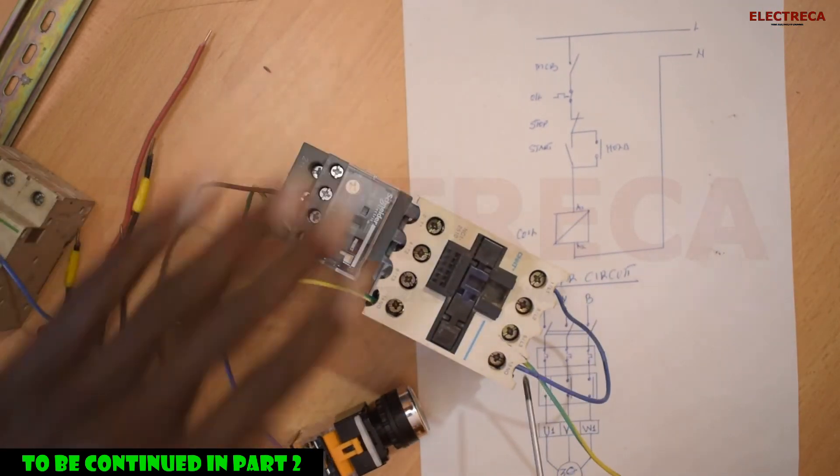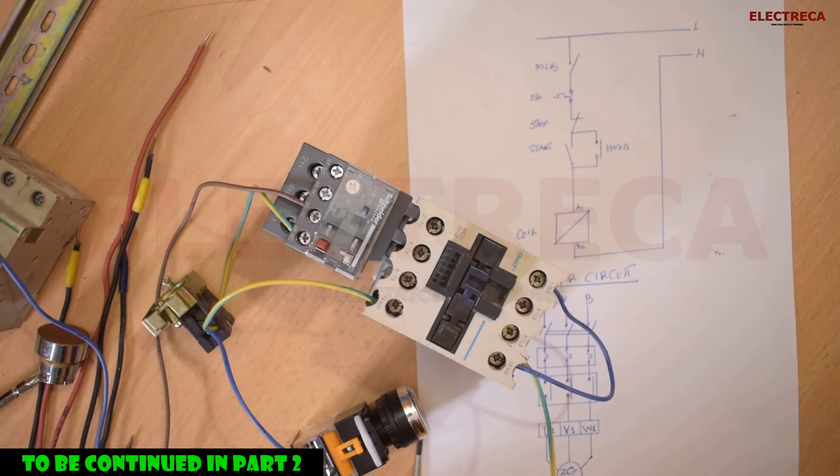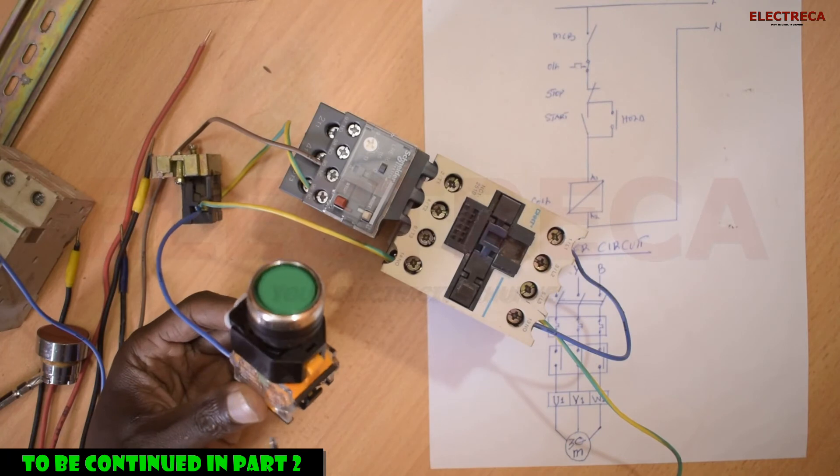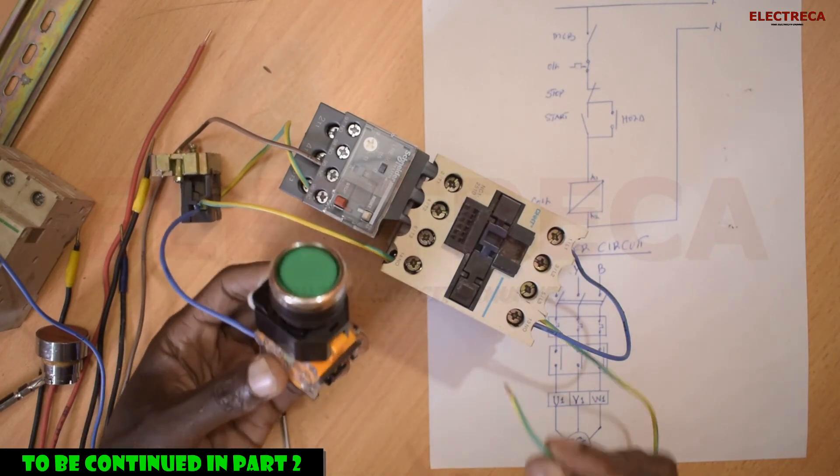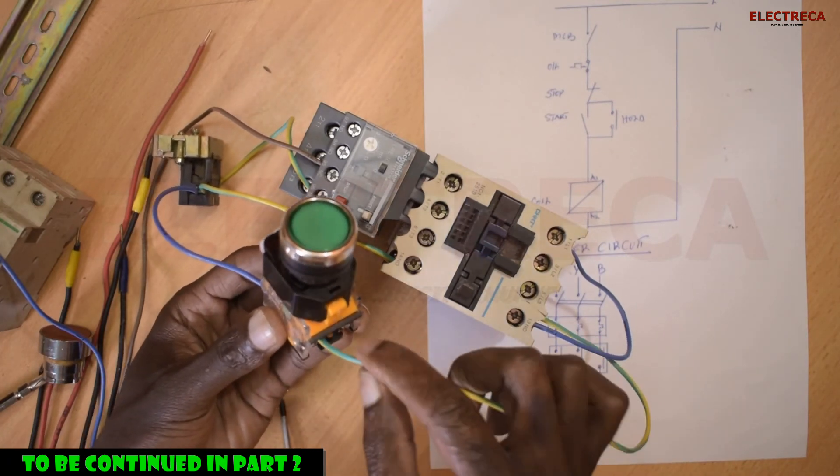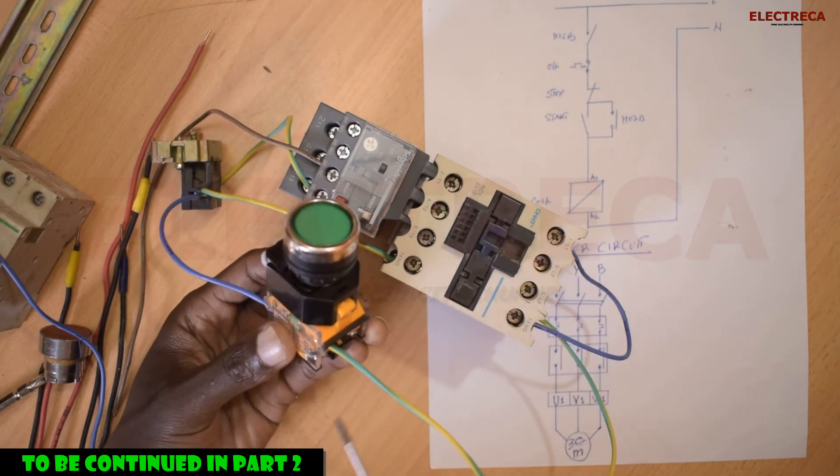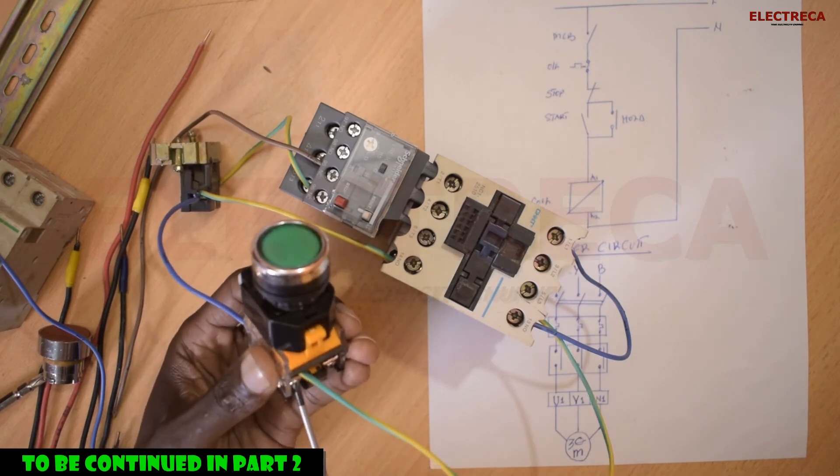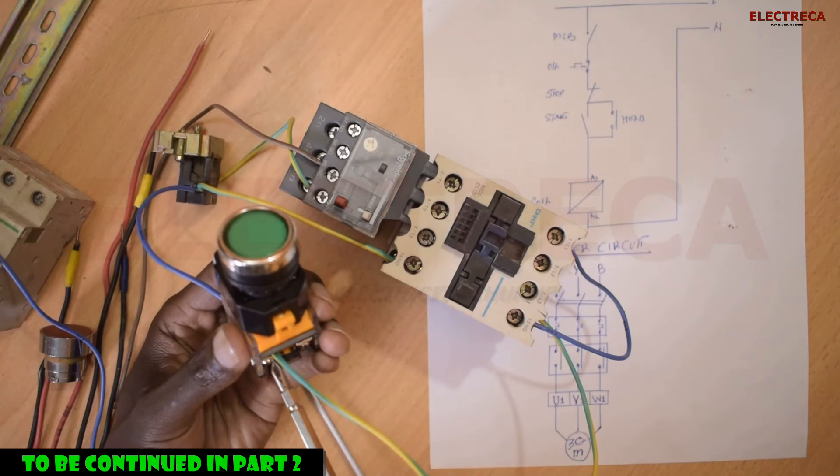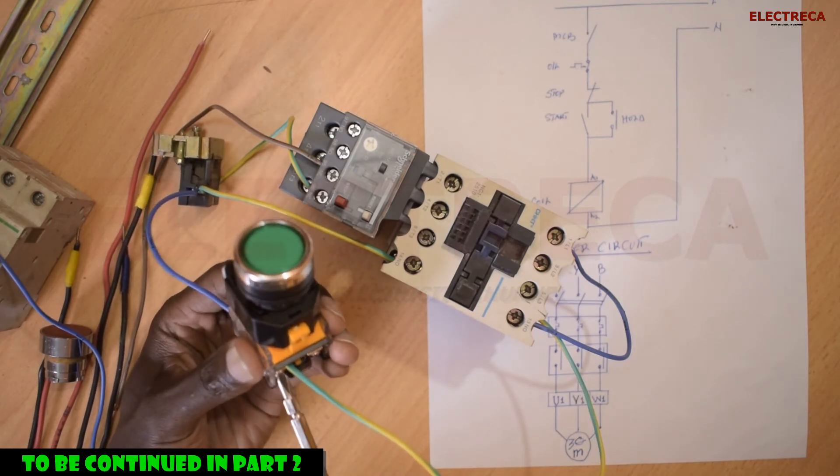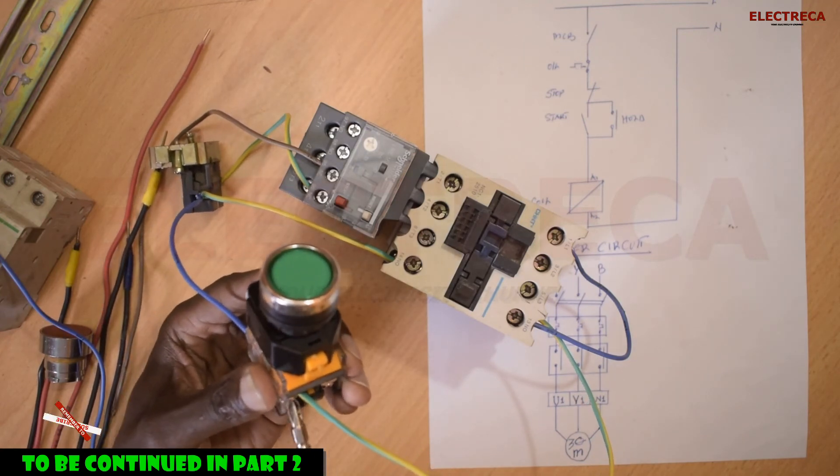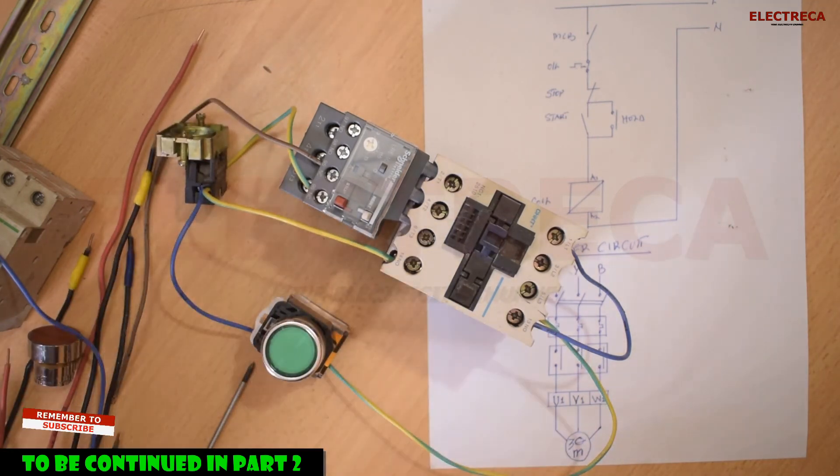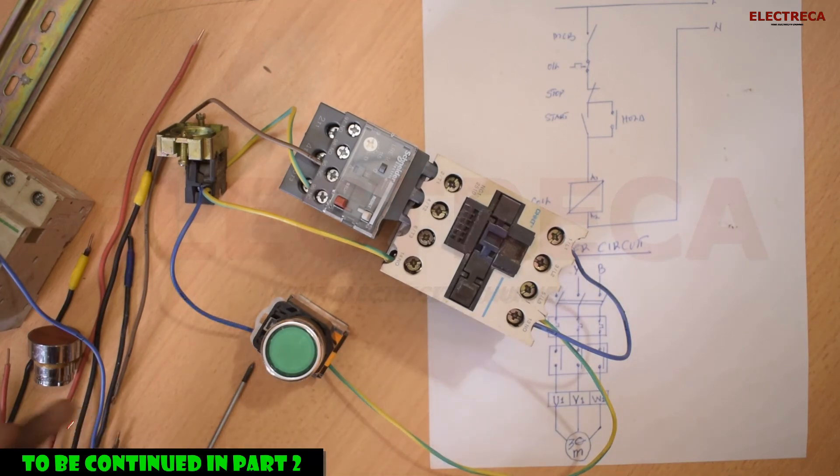But remember this contactor normally, they have the A2 - we have this one here you're seeing here and then we have another one right here. So you can save one wire instead of putting this side. You see, this will now go to the other end of the start here. Now this we're going to enter it here.